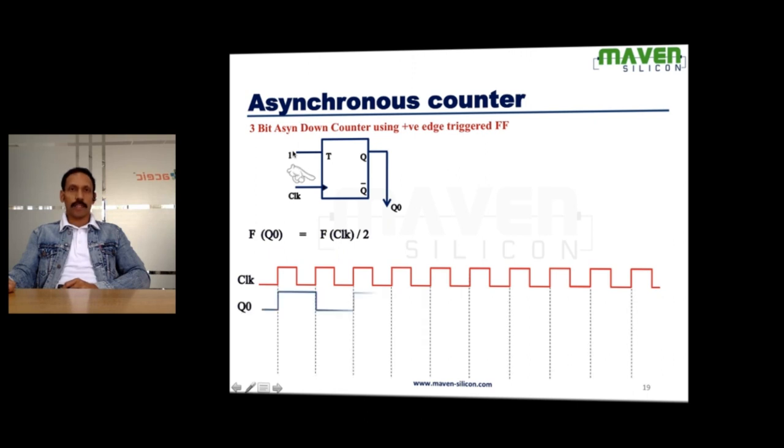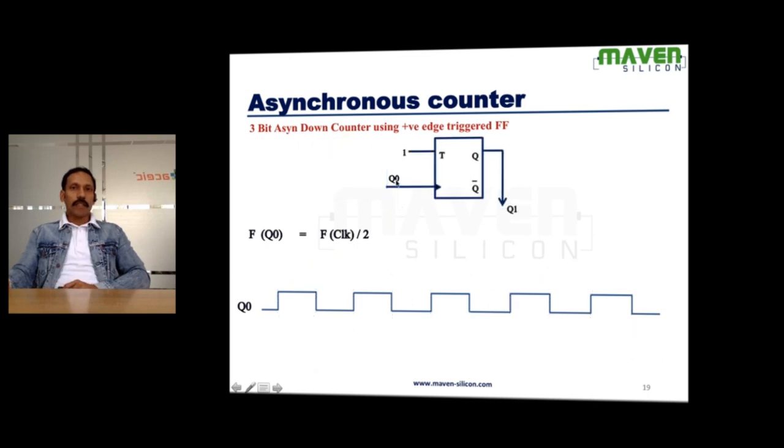So here, if you look at this Q0, it's going to toggle at every positive edge of the clock. This is a positive edge-triggered T flip-flop. Now, I am connecting this Q0 with the clock input of the next flip-flop. So, this Q0 is going to act as clock for the next flip-flop, and that's also a T flip-flop.